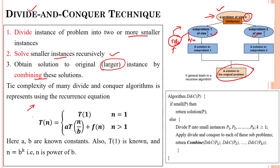This can be solved using a recurrence relation to find the time complexity. When the array size is 1, we have T(1) time units for execution. If the array has more than 1 element, we use the function a times T(n/b), where a is the number of sub-partitions, n/b is each partition size, and f(n) is the additional work. Here a and b are positive constants, T(1) is the initial condition, and we need to calculate n/b^k.